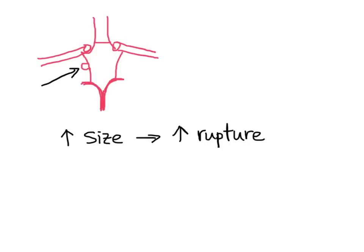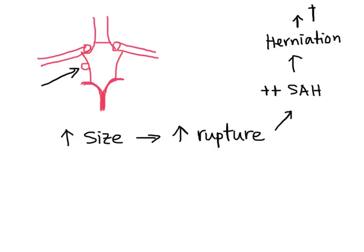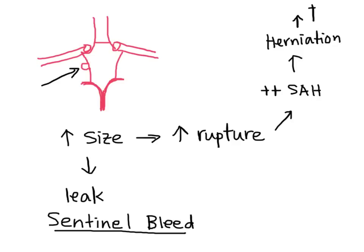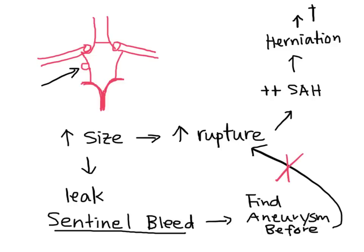As the aneurysm grows, the risk of rupture increases. A ruptured aneurysm causes significant blood loss into the subarachnoid space, pushing on the brain and leading to herniation and death. In some aneurysms, there are small or minor leaks prior to rupture, also called a sentinel bleed. Investigation of a sentinel bleed might lead to earlier discovery of an aneurysm that has not yet ruptured, and it is therefore the sentinel bleed that we wish to pick up in the emergency department.